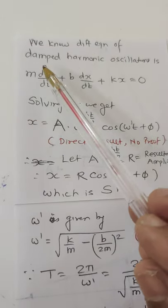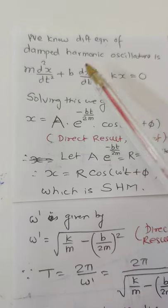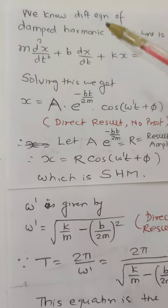We know that differential equation of damped harmonic oscillator is given by md²x/dt² + bdx/dt + kx = 0, which we have done just now. Remember, we have to write it directly.